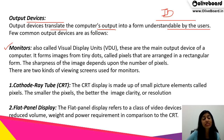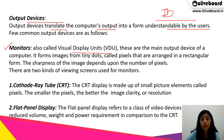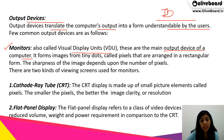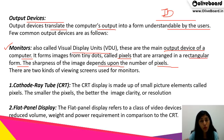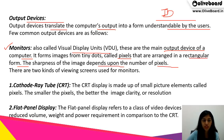One of the output devices is the monitor, which is also called the visual display unit. This is the main output device of a computer. It forms images from very tiny dots called pixels, which are arranged in a rectangular form. The sharpness of the image depends on the number of pixels — smaller and more numerous pixels give better quality.